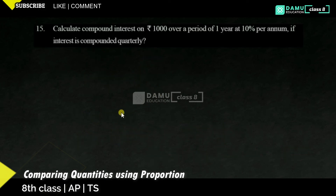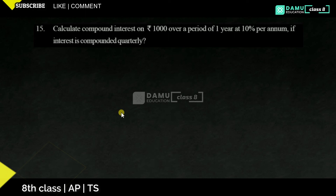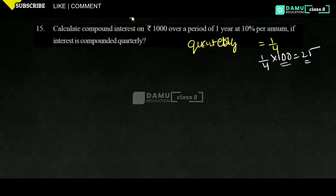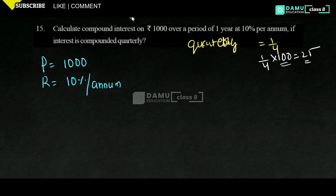Calculate compound interest on 1,000 rupees over 1 year at 10% per annum, compounded quarterly. Quarterly means 4 times per year. So n = 4, and the rate of interest changes to 10/4 = 5/2 percentage per quarter. The principal is 1,000.